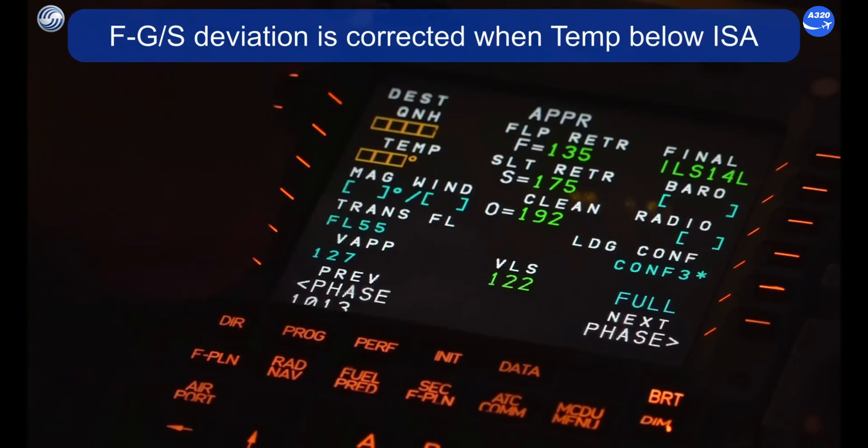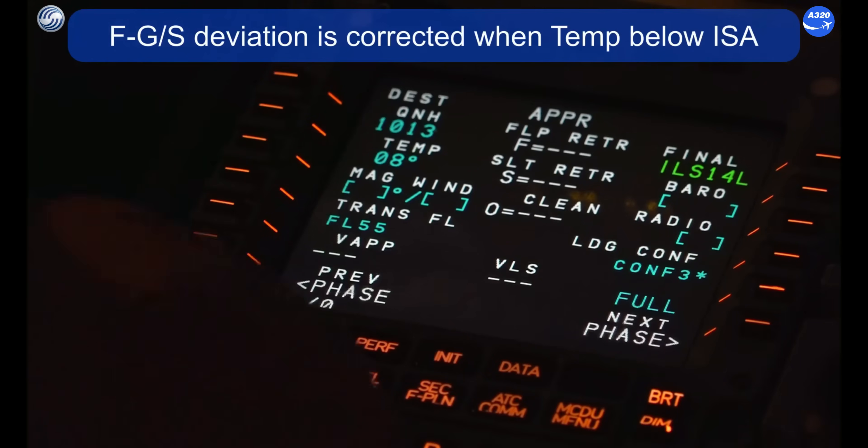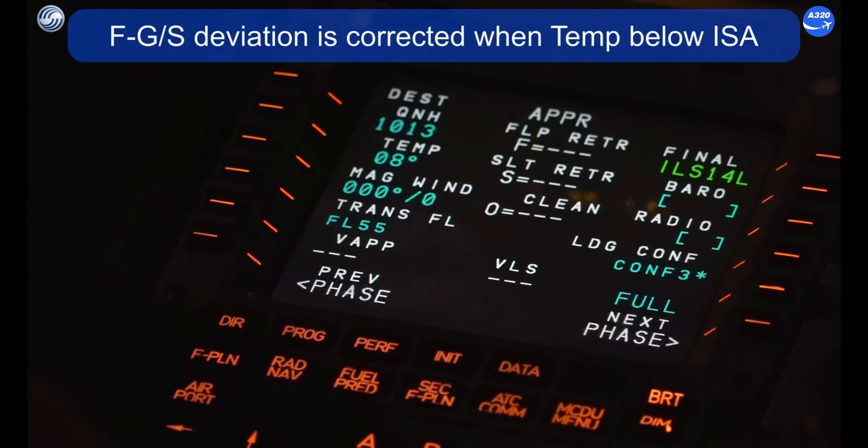Another important feature of the FLS is that it reduces flight crew workload and therefore enhances safety. The FLS is automatically selected when the approach in the FMS is compatible with FLS. You will be able to use the radar vectoring technique, just like for ILS approaches. Finally, the FLS vertical guidance is automatically corrected with the temperature at destination when this temperature is below ISA. The FLS uses the temperature at destination inserted on the PERF approach page of the FMS.